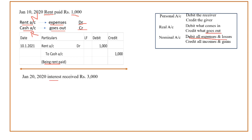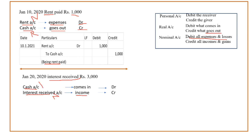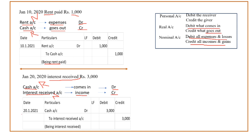Next example: Interest received. Interest received is an income. Two accounts: interest account and cash account. Interest received is an income — nominal account rule — credit all incomes and gains, so interest received is credited. Cash comes in — real account rule — debit what comes in, so cash is debited. Entry: Cash Account Dr. To Interest Received Account. Narration: (Being interest received).